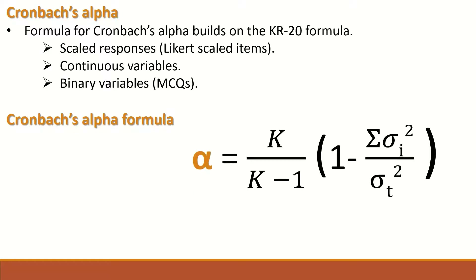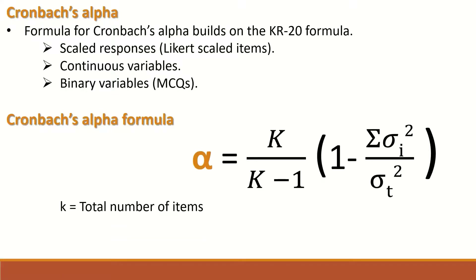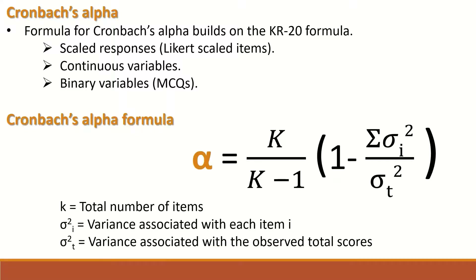The Cronbach's alpha formula or equation is: alpha = k / (k − 1) multiplied by 1 minus the summation of the variances for each individual item divided by the variance for the total score. Here, k represents the total number of items, the variance i represents the variance associated with each item, and variance t represents the variance associated with the total scores.